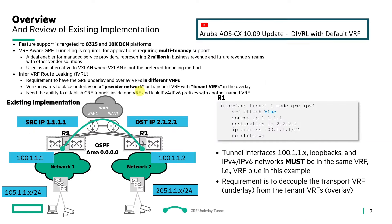On this slide, we'll provide an overview and review of the existing implementation. The feature is targeted toward the 8325 and 10K platforms, and in the industry it's known by the common term of VRF-aware GRE tunneling. This is required for applications needing multi-tenancy support in the data center, and is a deal enabler for managed service providers — at least $2 million in revenue potential. It also provides parity with other vendors and serves as an alternative to VXLAN where VXLAN is not the preferred tunneling method.